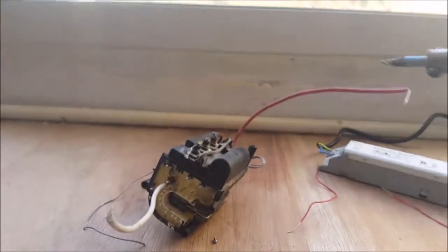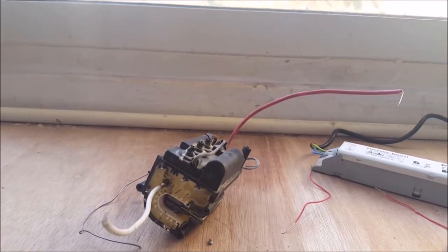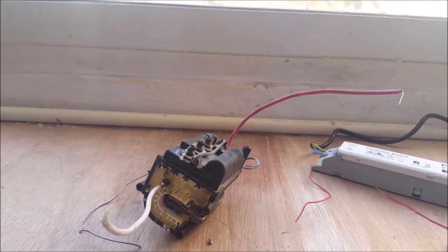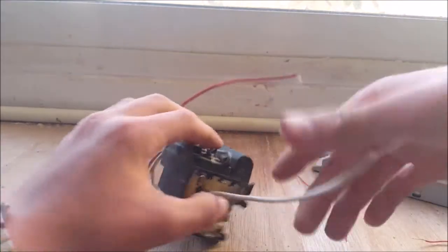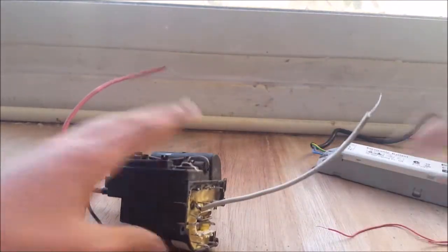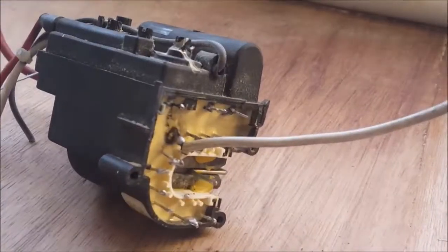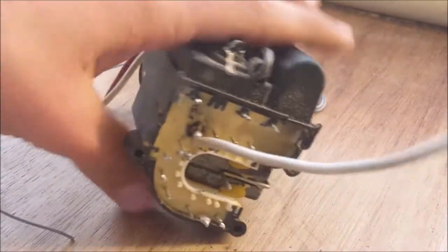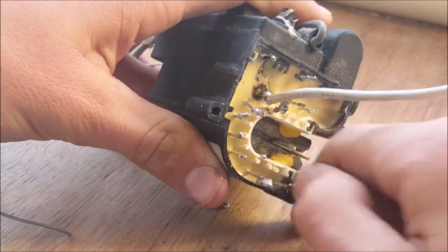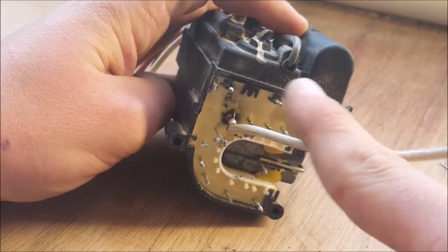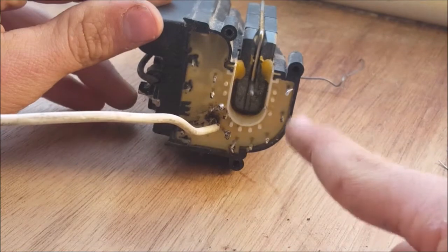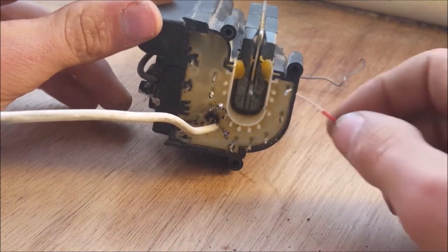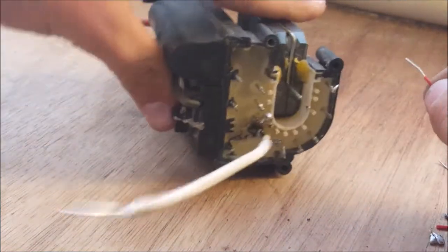So now we're going to need to hook the ballast outputs to the transformer primary or input. Now almost 99% of the transformers have the first 2 pins as the primary or input. If not, check with the multimeter which pins have a low resistance. That would be a good chance that they are the primary. So now we're going to need to solder these 2 wires to the 2 pins of the primary. Also as I said before, you should have soldered these first, and then the high voltage wire. Not like me, so that you can test which pin is the high voltage one.